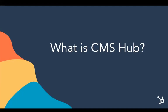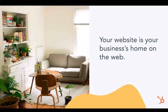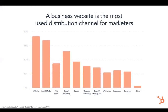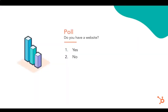Let's talk about HubSpot's new CMS Hub. First, let's take a step back and talk about your website. Your website is your business's home on the web - your most important digital asset, the first place people go to learn about you, your products, and your services. In a HubSpot study from late last year, we found that a business website is the most used distribution channel for marketers. I'll launch a quick poll - do you have a website? Seeing lots of yeses.